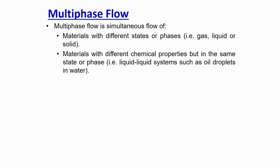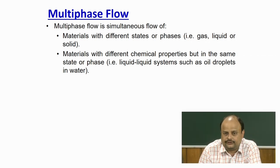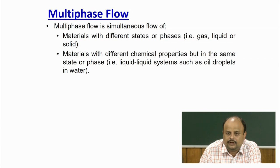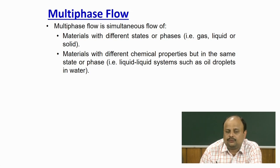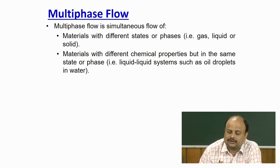The flow of air and water together — like rain or mist moving in air — is multiphase flow. There can also be two materials with different chemical properties but in the same state, also considered multiphase flow — for example, liquid-liquid systems. A common example from the oil industry is oil-water flow. When we explore oil from a reservoir, we inject water or steam as a motive fluid to push the oil, and what comes out is a mixture of oil and water.